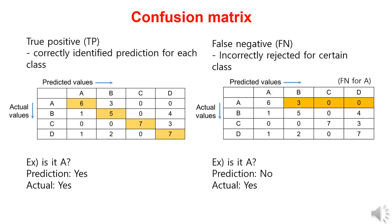If we take a closer look at the confusion matrix, when we predict yes or positive in response to the question of whether a specific class is correct — that is, the prediction matches the actual value being yes or positive — it is called a true positive (TP), and this corresponds to the diagonal area of the matrix. It represents the cases where we predicted yes, it is A when asked is it A, and the actual value is also A. On the other hand, when we predict no or negative but the actual value turns out to be yes or positive, it is called a false negative (FN). It represents the cases where we predicted it is not A, but the actual value is A, indicating that the prediction was incorrect.